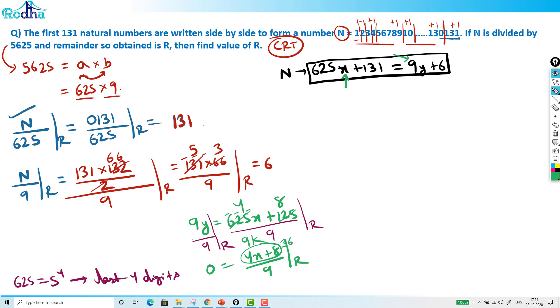That means, x equal to 7, I should put here. If I put x equal to 7, so my answer will become 625 into 7 plus 131, that is equal to 4375 plus 131, which equals 4506 is the answer for this question.